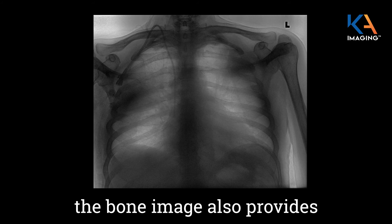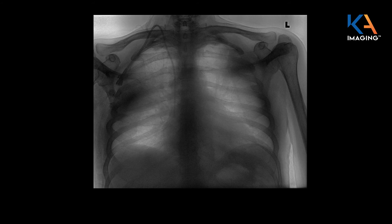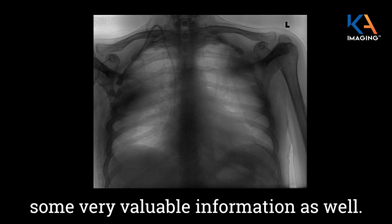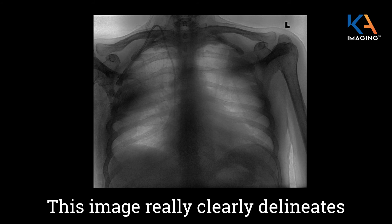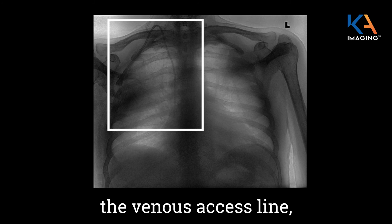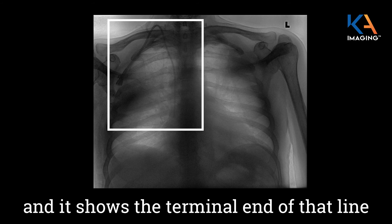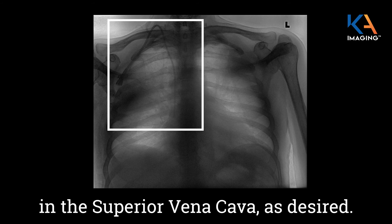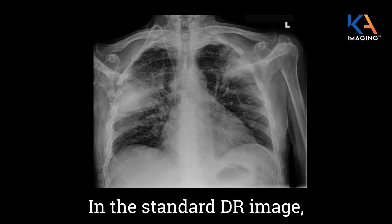In its own right, the bone image also provides some very valuable information. This image really clearly delineates the venous access line and shows the terminal end of that line in the superior vena cava, as desired.